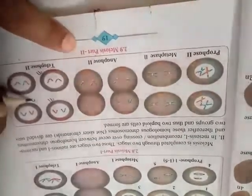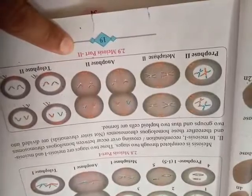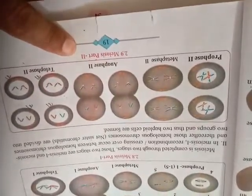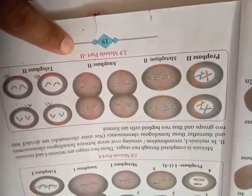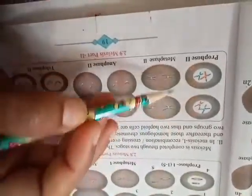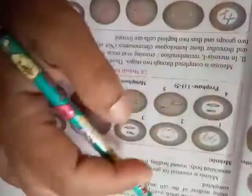And hence at the end you are getting four daughter cells. And these four daughter cells are now haploid in number, meaning only n number of chromosomes. And these four are not identical to each other and they are also not identical to the parents. So this is known as meiosis cell division.